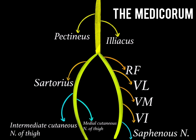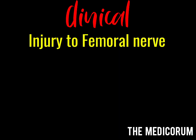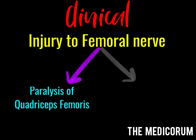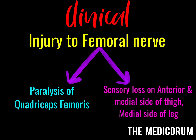With the help of this one diagram, you can easily learn all the branches of the femoral nerve. It is also important to consider the clinical aspects. If there is an injury to the femoral nerve, the muscles supplied by it will get paralyzed and there will be sensory loss due to its cutaneous branches. The first symptom is paralysis of the quadriceps femoris muscle, the second is sensory loss on the anterior and medial side of the thigh, and there will also be sensory loss on the medial side of the leg.